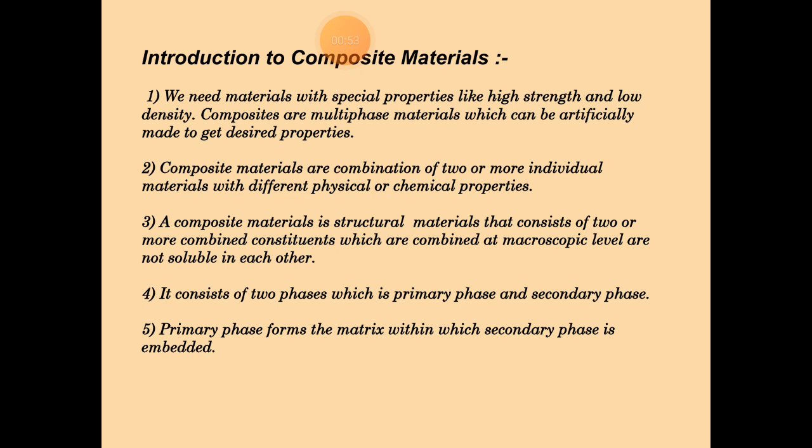Introduction to composite materials: We need materials with special properties like high strength and low density. Composites are multiphase materials which can be artificially made to get desired properties. Composite materials are combinations of two or more individual materials with different physical or chemical properties.